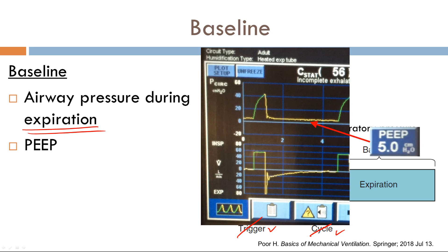we can see that the PEEP here is 5. This green line designates inhalation, and this yellow phase is exhalation. Remember that inhalation with a mechanical ventilator is a very active process — the ventilator is forcing positive pressure into the lung circuit. However, exhalation is a very passive process, and essentially depends on the chest wall and lung recoil to fully exhale all the inhaled air.